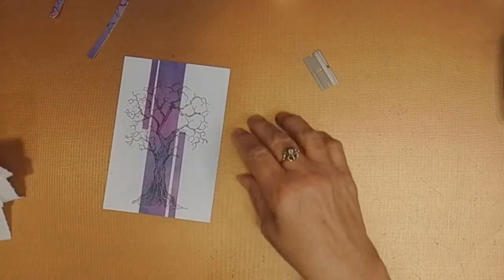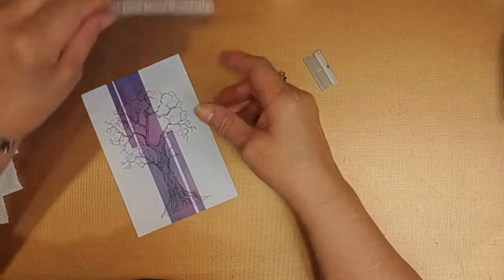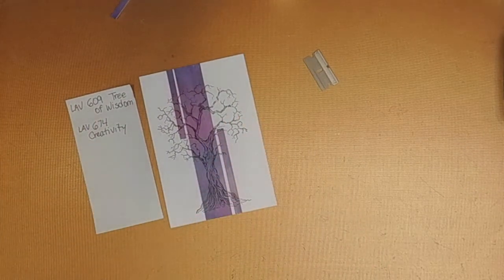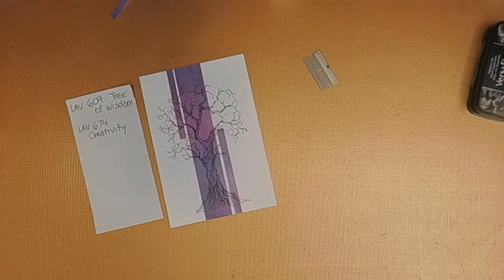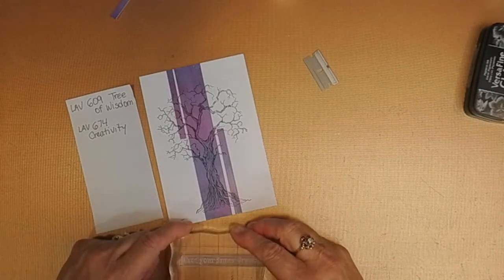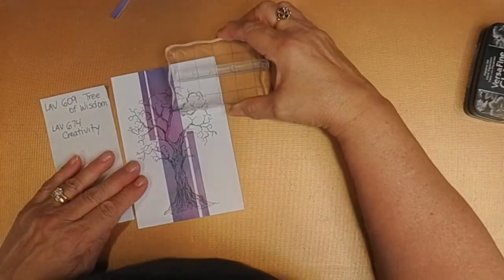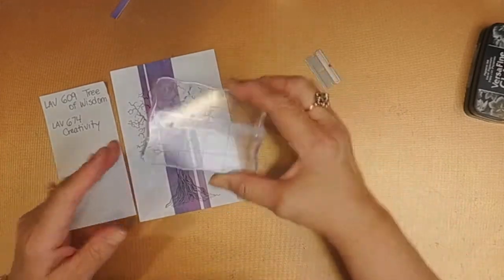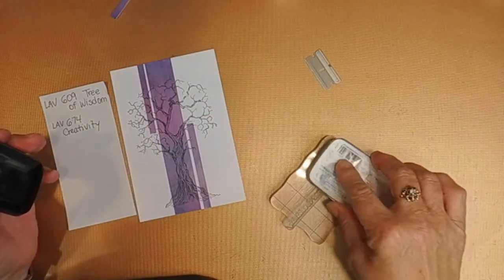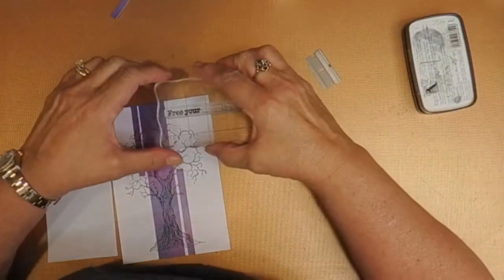I'm using the paper towel to press down in case I have ink on my fingers, I don't want to smudge the design. Now I'm going to use the creativity stamp by Lavinia, which is number 674. Free your inner creativity is the sentiment, but I'm going to be using it in three different pieces. So first I'm going to stamp free your at the top, being careful not to get ink on the letter of the next word.